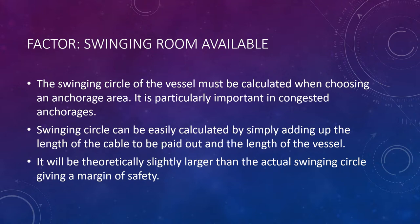The next factor is the swinging room available. The swinging circle of the vessel must be calculated when choosing an anchorage area — it is particularly important in congested waters. The swinging circle can be calculated by adding the length of cable to be paid out to the length of the vessel. This gives a theoretically slightly larger value than the actual swinging circle, providing a margin of safety. The length of cable to pay out depends on the depth of the water.